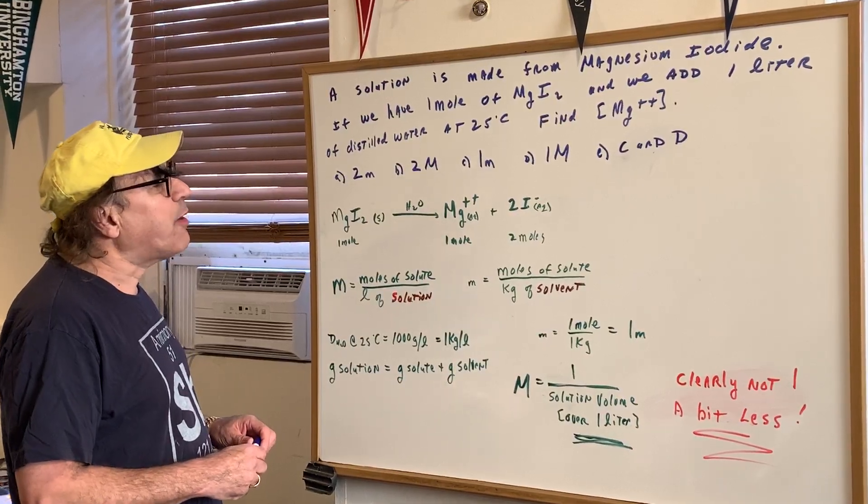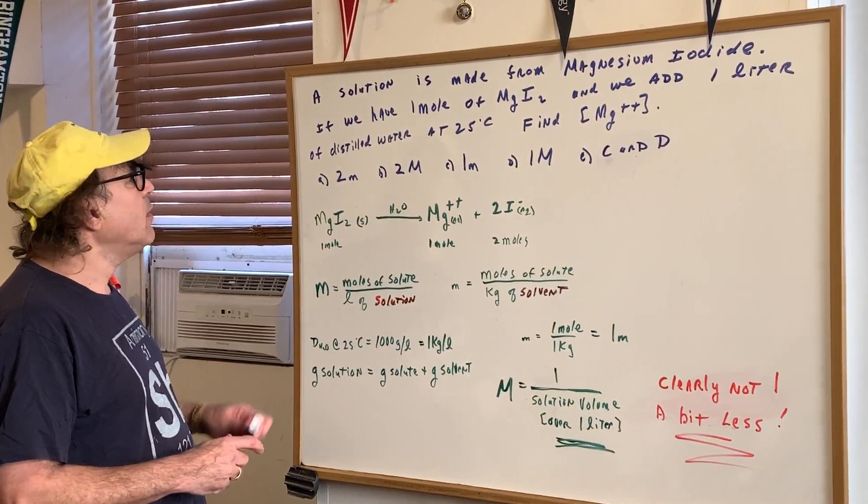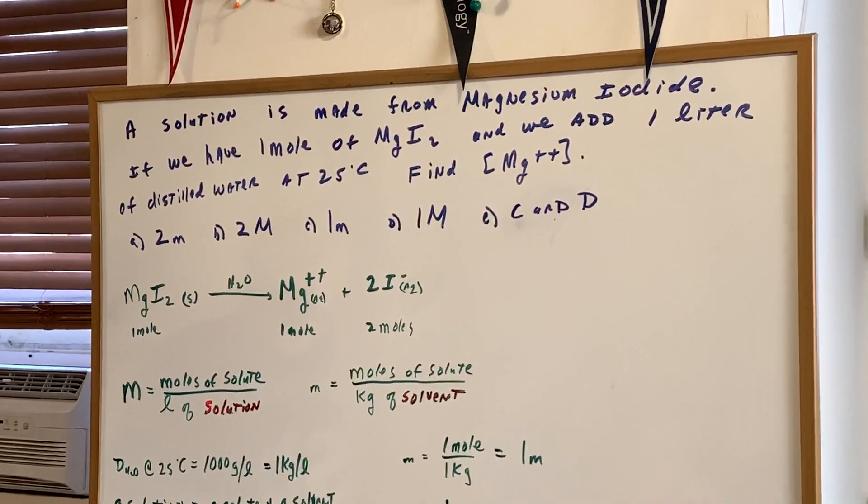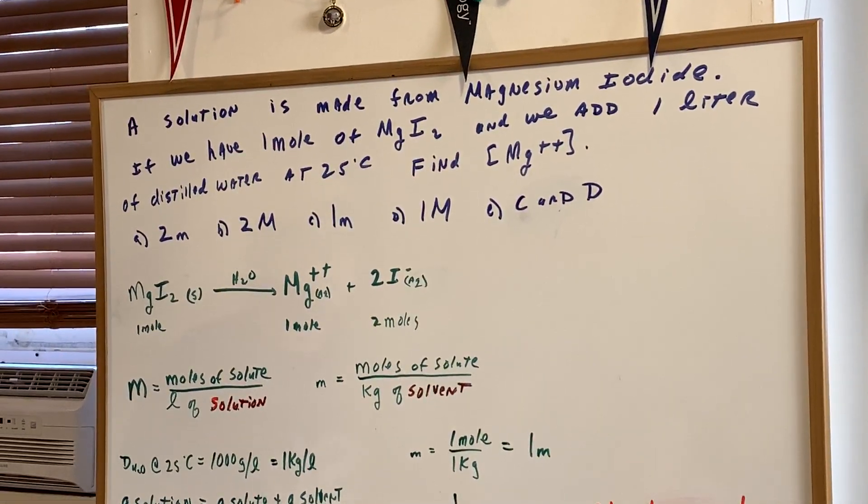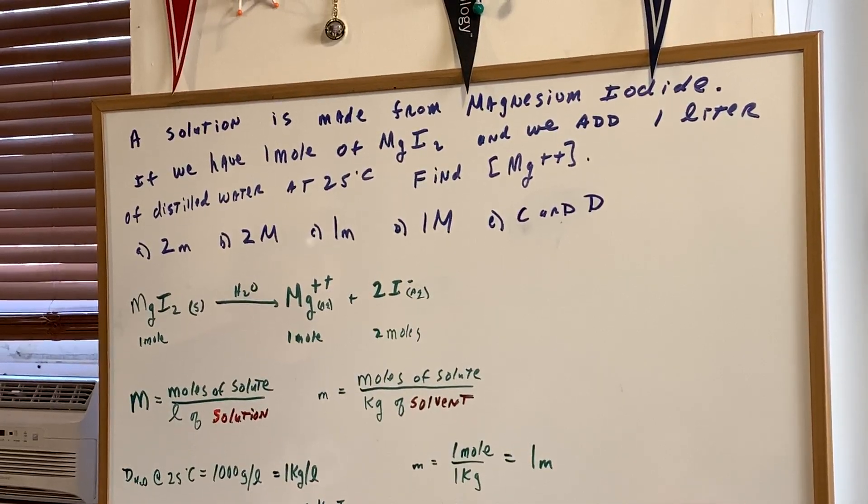A solution is made from magnesium iodide. If we have one mole of magnesium iodide and we add one liter of distilled water at 25 Celsius, find the concentration of the magnesium ion.